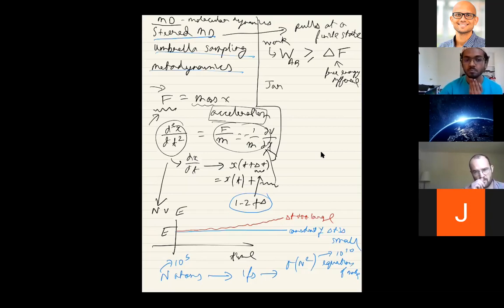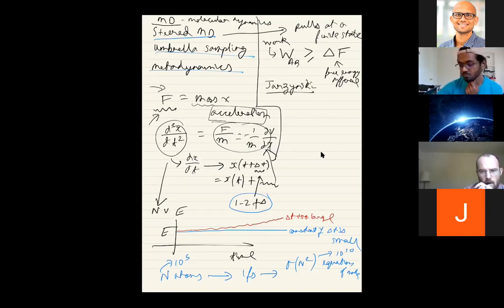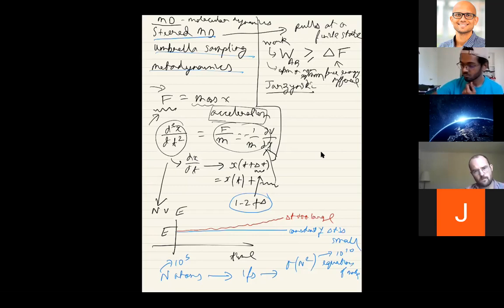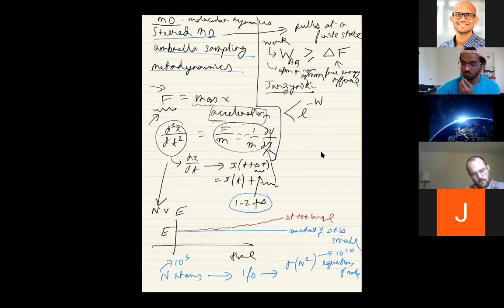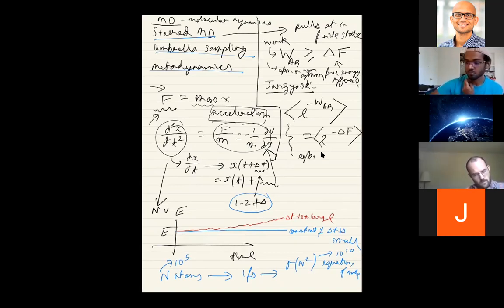Steered MD became very popular in the late 1990s when Jarzynski — a professor in chemistry and my colleague — came up with the Jarzynski relation, which showed that instead of this averaging inequality, if you average the exponential e^(−β W_AB), that average will be equal to e^(−ΔF). This averaging can be equilibrium or non-equilibrium — you could pull the system in whatever way you want.